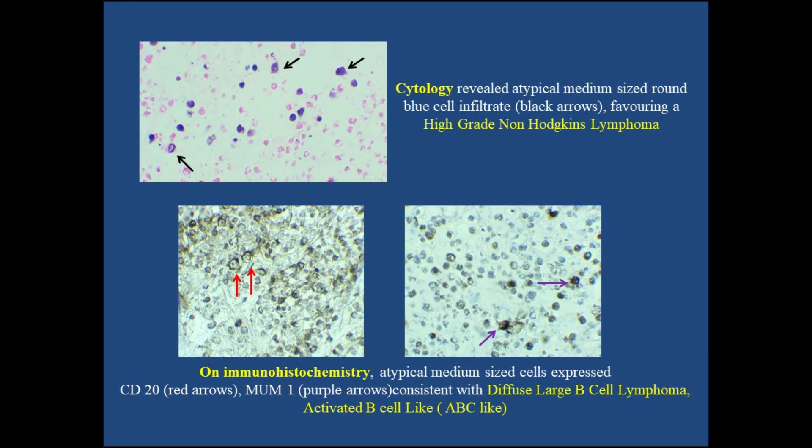Cytology of the vitreous sample showed cells favoring high-grade non-Hodgkin's lymphoma, as indicated by black arrows in the upper image. On immunohistochemistry, these cells expressed CD20 positivity (red arrows, left lower image) and MUM1 positivity (purple arrows, right lower image). These findings confirmed the diagnosis of diffuse large B-cell lymphoma.